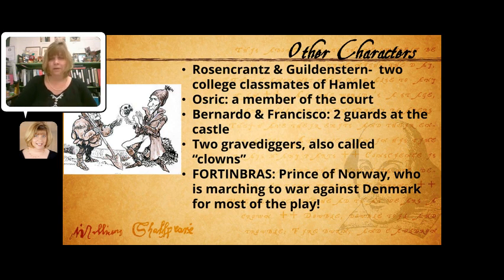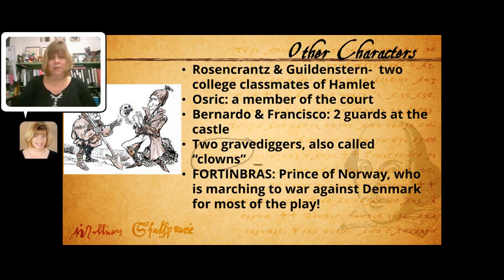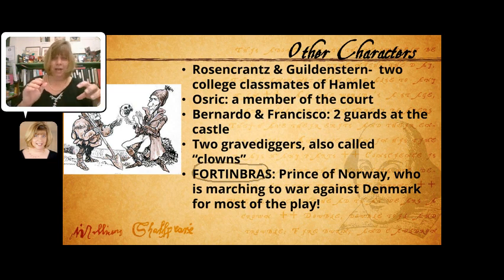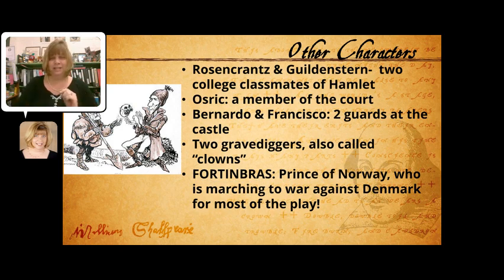There are two grave diggers, also referred to as clowns — Shakespeare often used that term for lower-class characters who provided comic relief, not the kind with funny red noses and big wigs. And then there's Fortinbras, an interesting character because we hear about him throughout the whole play but don't meet him until the very end. He's the Prince of Norway, Denmark's neighbor, and he's marching to war against Denmark from the first act all the way through to the end.